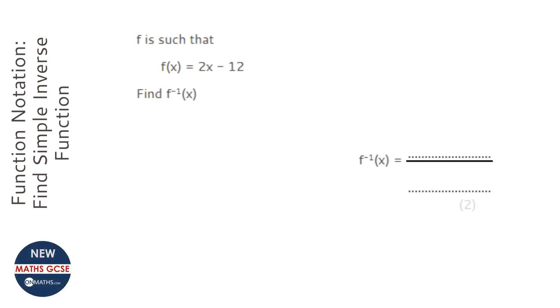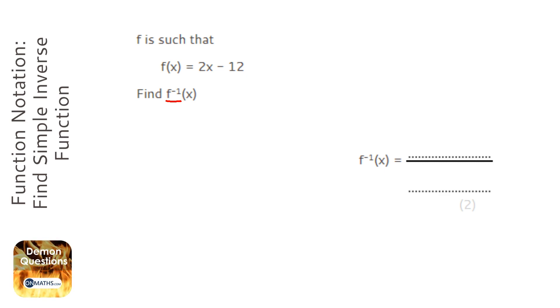You might not have seen this symbol before. If you have, then great. It means find the inverse function of f. So f of x is 2x minus 12 — what would the opposite be?